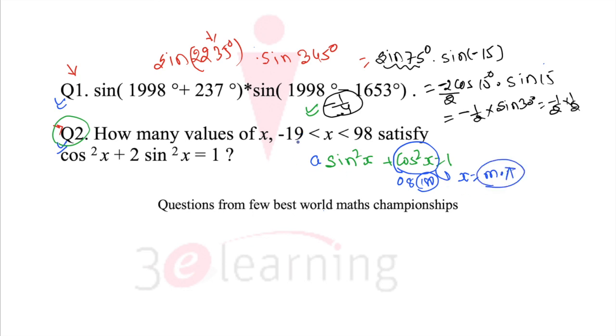So here we can say the range of x is how much? We have minus 19 and multiple of π should be minus 19 to 98. We need to find how many integral values of m is possible.